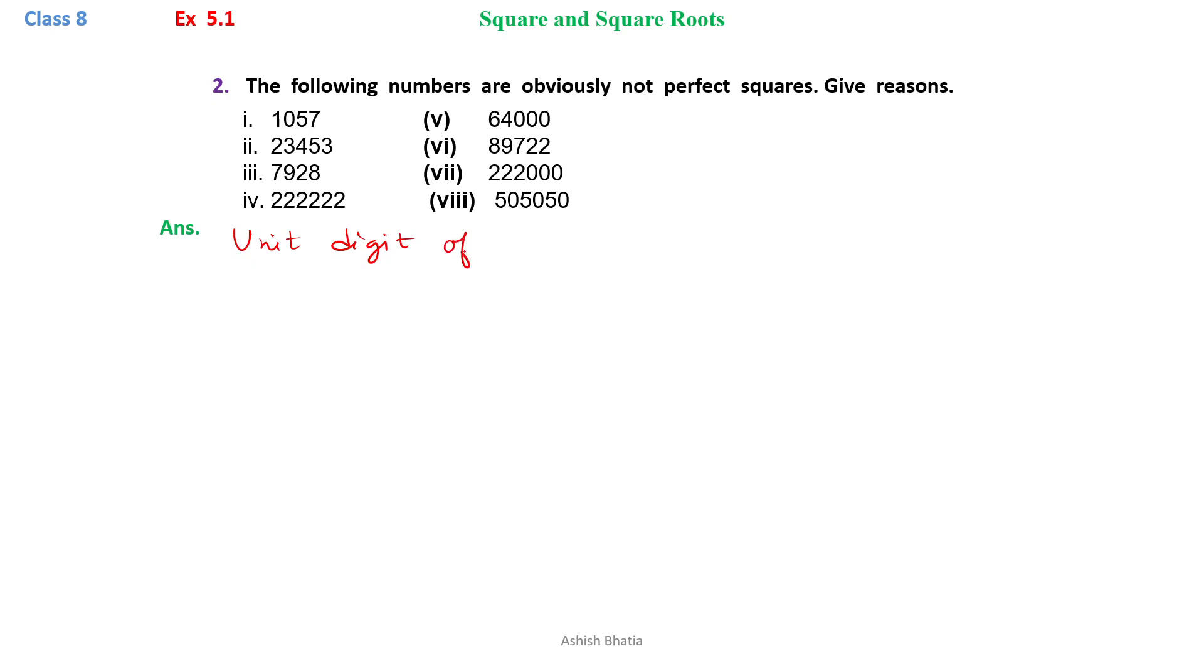If the unit digit of a number is 1, 4, 6, 9, or 5, or even number of zeros, then only it can be a square number.